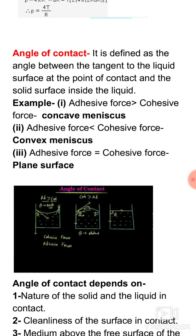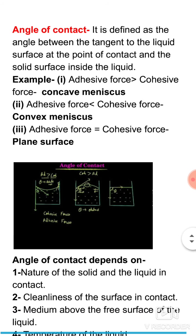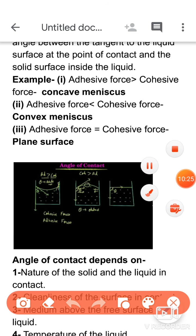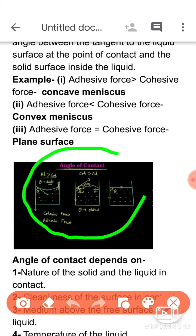Now we are coming towards the next topic — that is angle of contact. सबसे पहले angle of contact की definition से पहले, नीचे का diagram देखें। Yesterday I explained one topic जिसमें एक word use किया था — meniscus. Meniscus means the curved surface जो liquid किसी container के अंदर रखा होने पर container के साथ touch करने पर बनती है।